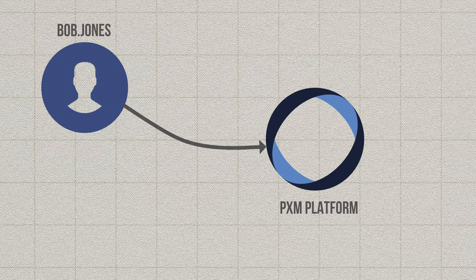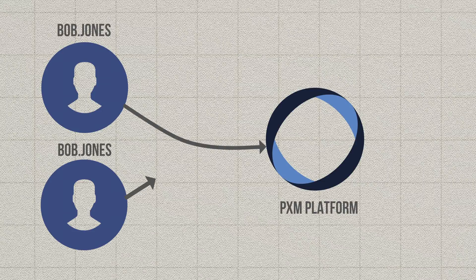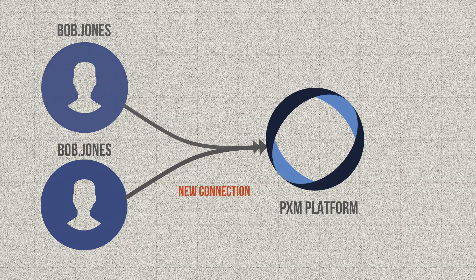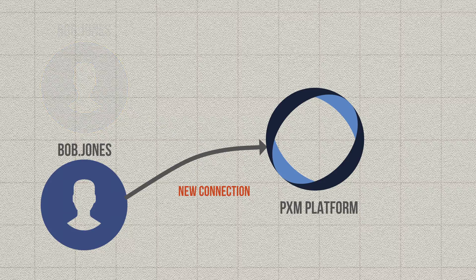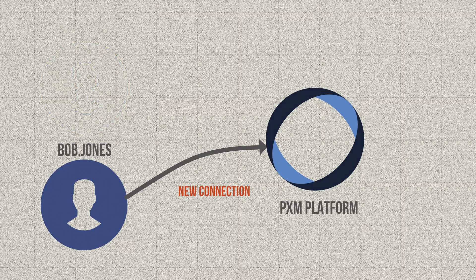As a quick reminder, we've not changed the single instance of a user paradigm. If a second Bob Jones logs in successfully, the first instance of Bob Jones will be disconnected.